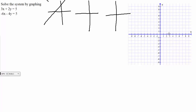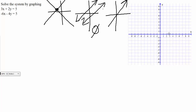You have one solution, and that happens when your lines intersect at one point — that is your intersection point where they meet. You can also have no solution if your lines are parallel, which means they will never cross, never intersect, therefore no solution. Or you can have the third case where, after simplifying or putting the equations in the proper format, they actually end up being the same exact line, which means every single point is going to intersect — that is infinitely many solutions.